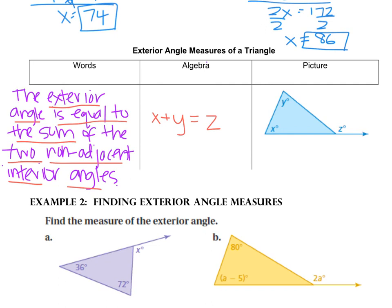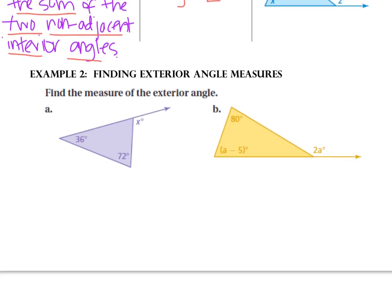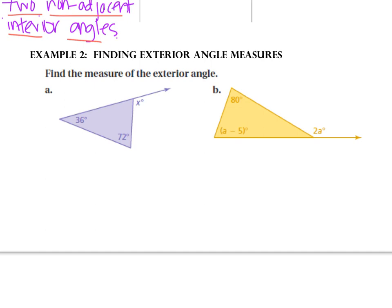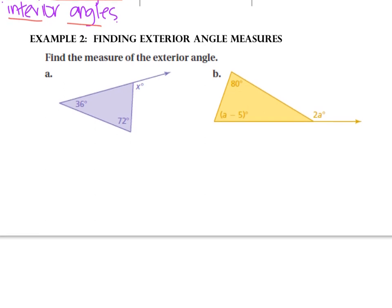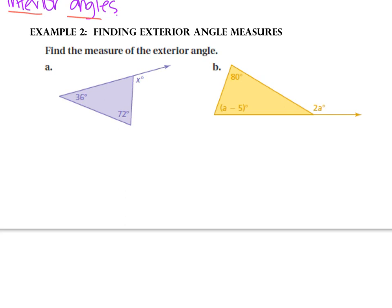Some of these you can just punch into the calculator, but some you can't, so let's build that foundation and write the equation together. We're going to do x is equal to 36 plus 72, because the exterior angle is equal to the sum of the two non-adjacent interior angles. 36 plus 72 is 108, so x is equal to 108.